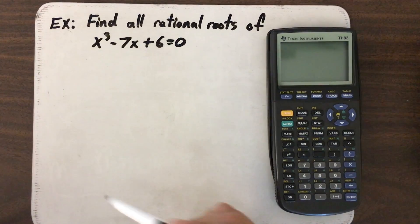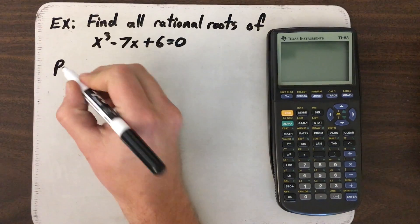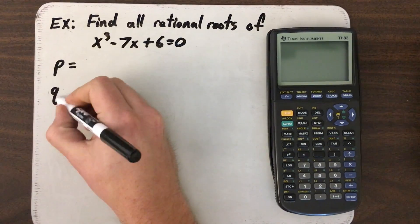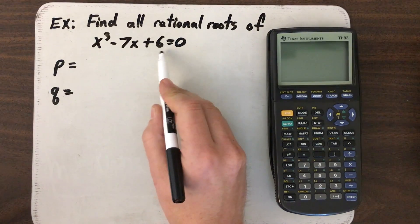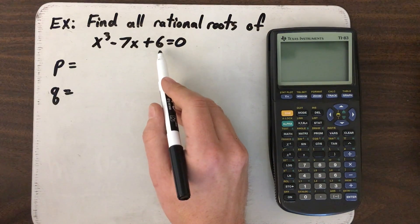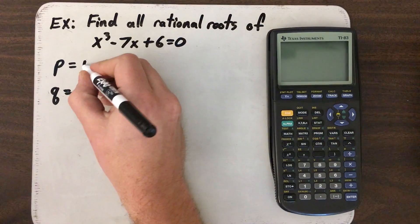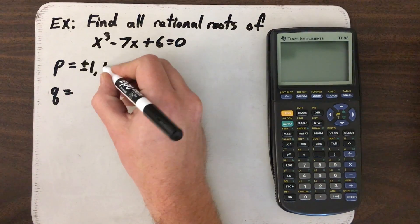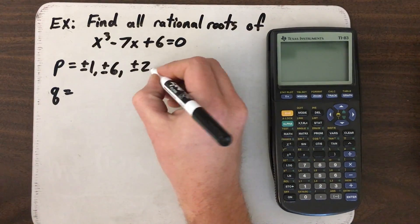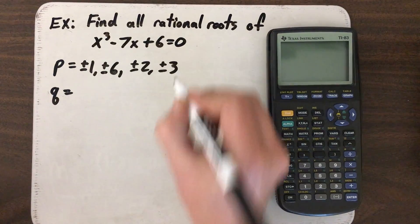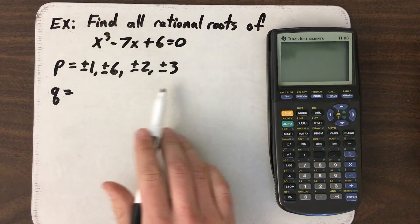First thing we need to do is figure out our possible P values and our possible Q values. P values come from our constant on the end here, and we need all the factors of six positive and negative. So there's one, there's six, there's two, and there's three. So those are all of our possible P values.